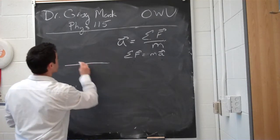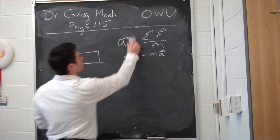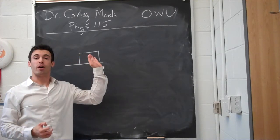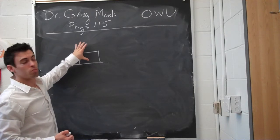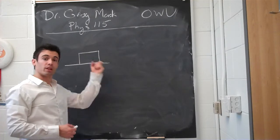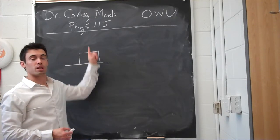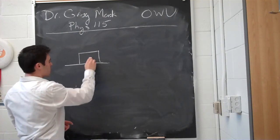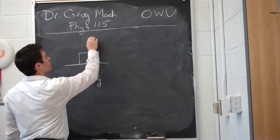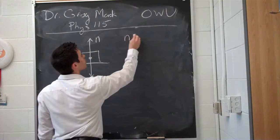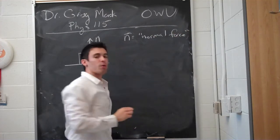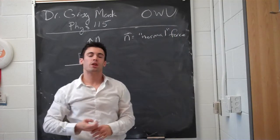If we're thinking about some box that is on the floor, the reason the box is not falling through the floor is because the floor is pushing up on the box. The reason it's not accelerating in the positive y or negative y direction is because the force that the Earth is exerting on the box — pulling down by gravity — is equal to the force the floor is exerting on the box pushing it up. So F sub g, the force of gravity, is equal to the normal force.